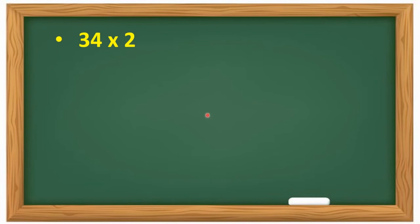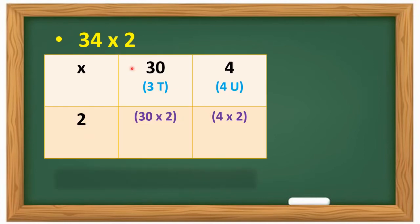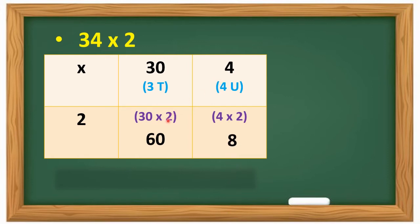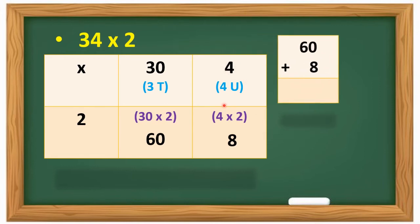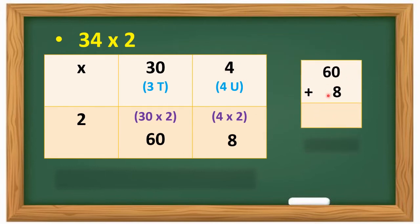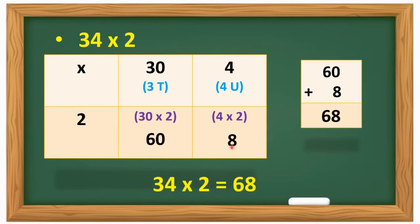34 multiplied by 2. So as we have split it into 3 tens and 4 units — first we will multiply 30, that is 3 tens, by 2. So 2 zeros are 0 and 2 threes are 6. So our answer is 60. Then 2 multiplied by 4 is 8. Now students, you are going to add 60 and 8. So 60 plus 8 is 68. So our answer is 34 multiplied by 2 is 68.